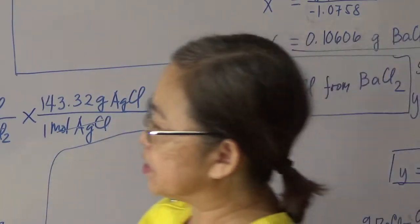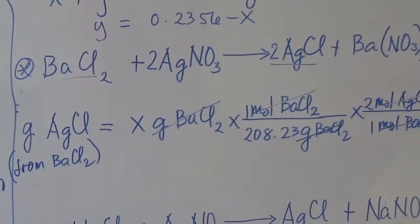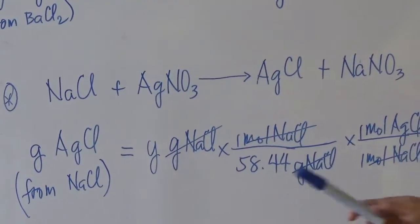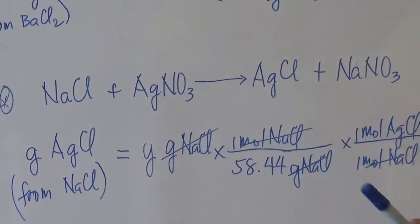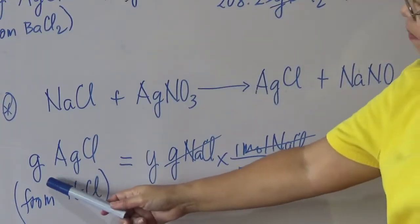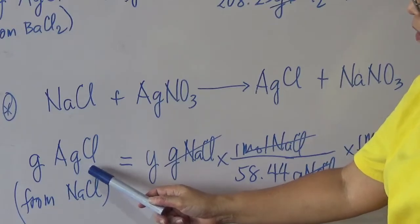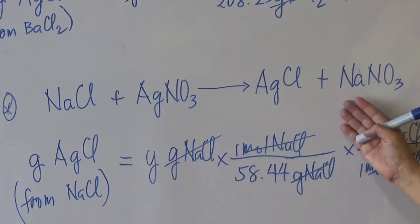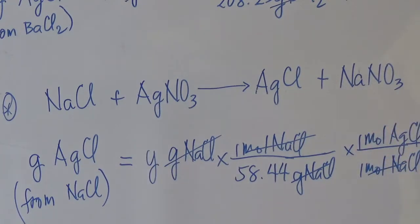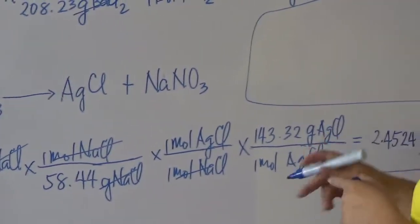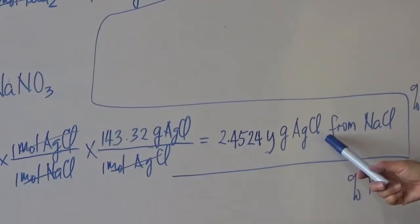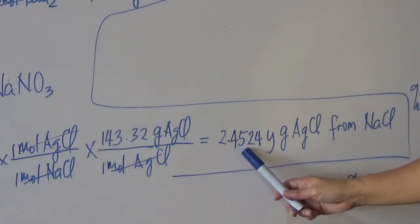The other component is sodium chloride, which also reacts with the precipitant to produce the precipitate. Balancing this equation, you will notice the ratio is 1:1 between sodium chloride and the precipitate. Starting from the unknown mass y of sodium chloride, convert to moles, then to moles of precipitate using the 1:1 ratio, then multiply by the molar mass. The amount of precipitate from sodium chloride is 2.4524y grams.